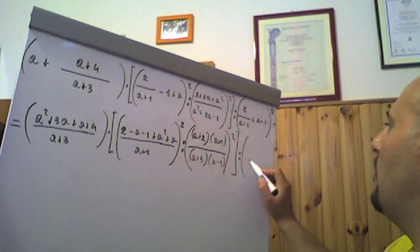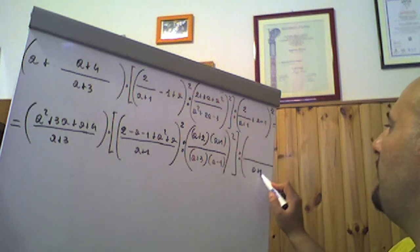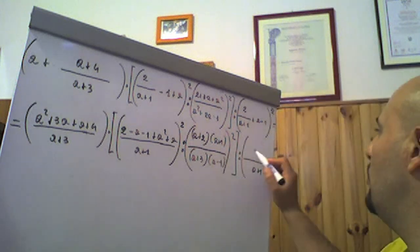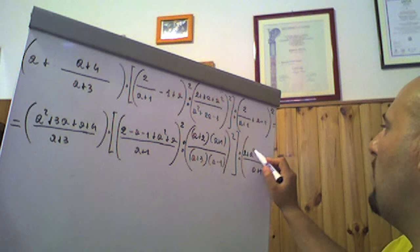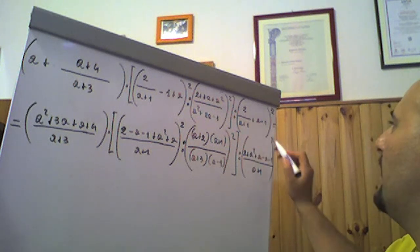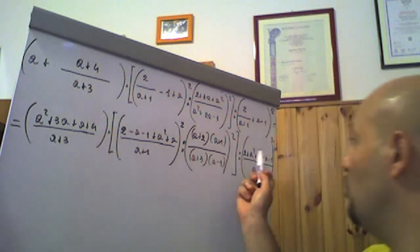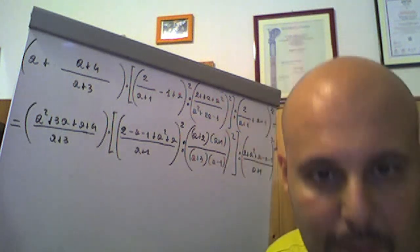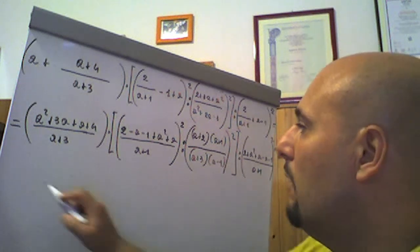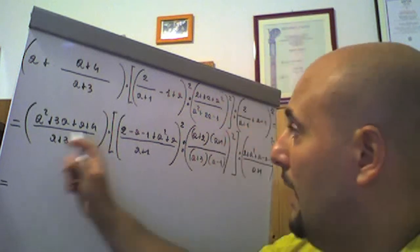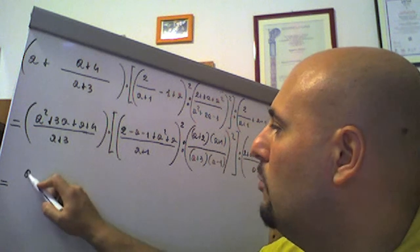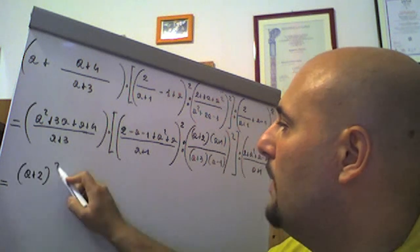Diviso, abbiamo la tonda. Facciamo il minimo comune multiplo, che in questo caso è a più 1. A più 1 diviso a più 1 fa 1, per 2: 2. Allora a per (a più 1) è un a quadro più a, meno 1 per (a più 1) è un meno 1 meno a. Tutto quanto al quadrato. 2 più a quadro più a meno a meno 1: ho moltiplicato prima a per (a più 1) e poi meno 1 per (a più 1), diventando meno 1 meno a. Allora vediamo cosa succede: 3a più a fa 4a, a quadro più 4a più 4 e (a più 2) tutto quanto al quadrato.